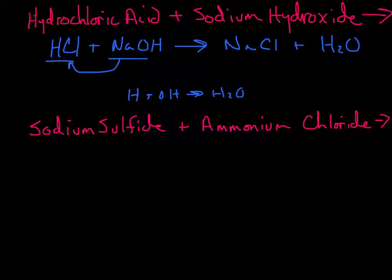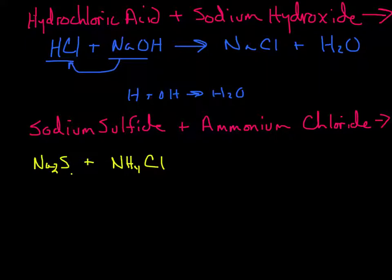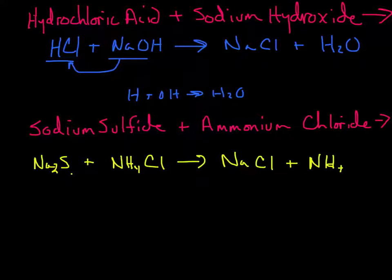Next: sodium sulfide is Na₂S because sodium is +1 and sulfide is −2. Plus ammonium chloride — ammonium is NH₄⁺, chloride is Cl⁻, ammonium is +1 and chloride is −1, that's okay. We switch partners: sodium combines with chlorine, and ammonium combines with sulfide.